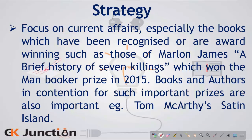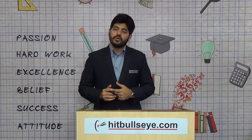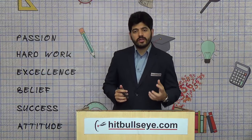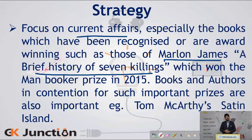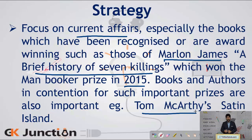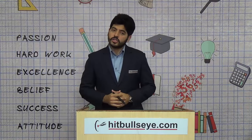Starting with the strategy of preparing such questions. Firstly, it will be very important for us to look into current affairs. In that, we have to look into books which have won certain awards, such as the book by Marlon James, 'A Brief History of Seven Killings', which had won the Man Booker Prize for 2015. Another example is 'Satin Island' by Tom McCarthy, which is also important.